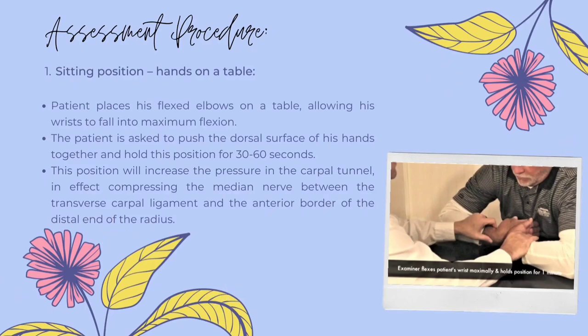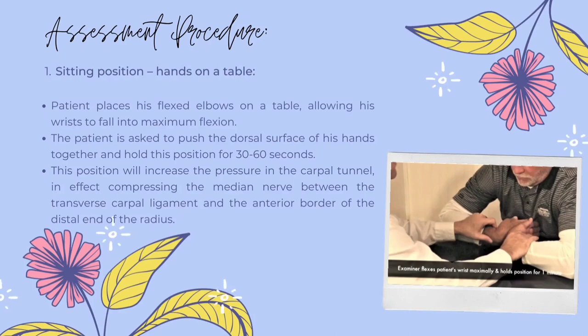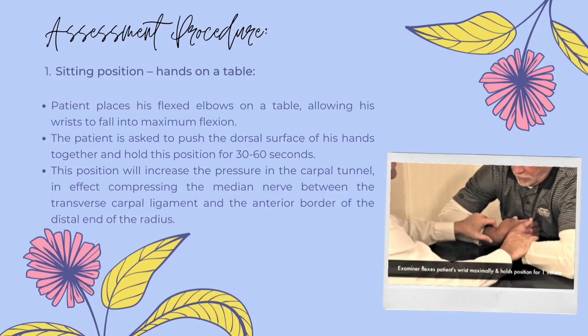Following that, there are three methods for assessing the procedure. The first is a sitting position in which the patient's hands are placed on a table. The patient places their flexed elbow on the table, allowing the wrist to fall into maximum flexion. The patient is then asked to push the dorsal surfaces of the hands together and hold this position for 30 to 60 seconds. This position increases pressure in the carpal tunnel, compressing the median nerve between the transverse carpal ligament and the anterior border of the distal end of the radius.